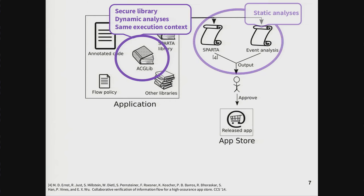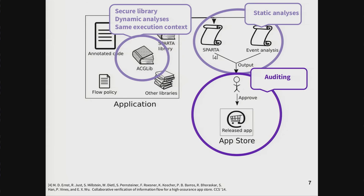Once this is done, it goes through some static analysis tools, and then there's an auditing step. Any sound static analysis will have some false positives, so we need a way to determine whether these are actually false positives or malicious behavior. We pull this auditing model from one of the underlying analyses we use called Sparta. This is an App Store approval model where the auditor approves or rejects before the app is actually released. This is only one possible model — you could substitute an alternative, such as a third-party organization certifying compliant applications.